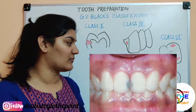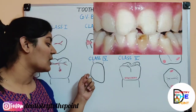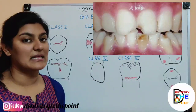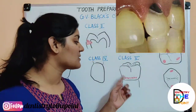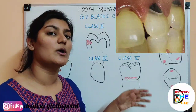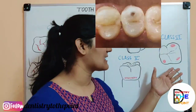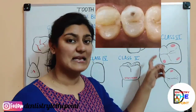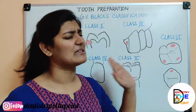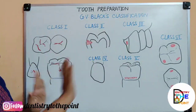Class 1 involves pit and fissure preparations: occlusal surfaces of molars and premolars, the occlusal two-thirds of the facial surface, and proximal surfaces. Class 2 involves the proximal surfaces — that is mesial or distal surfaces — of molars and premolars. Class 3 involves the proximal surfaces of the anterior teeth. Class 4 involves the proximal surface of anteriors with involvement of the incisal line angle, either with or without involving the incisal line. Class 5 involves preparations of the gingival two-thirds of facial, lingual or palatal surfaces of all teeth. The later-added class 6 involves preparations of incisal edges of anteriors or cusp tips of premolars and molars.